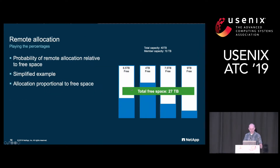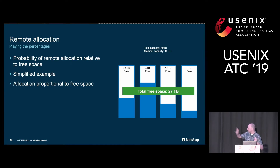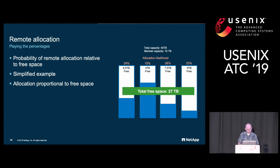Here is a simplified example of how we choose where to send a remote allocation once we've decided we need it. We have several volumes with different amounts of free space: one node has four terabytes free and another at the other end has nine terabytes free. You'd expect more allocations to go to the nine terabyte volume. We calculate likelihoods, and those likelihoods reflect that the nine terabyte volume would be roughly twice as likely to get an allocation as the four terabyte free volume.